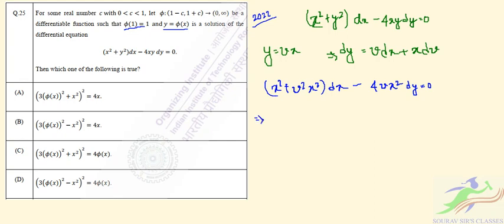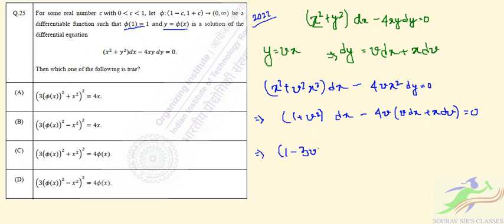After simplifying, we can write it in this way: 1 plus v squared dx minus 4v times (v dx plus x dv) equal to 0. From here, after simplifying, we can write it as 1 minus 3v squared — so v squared minus 4v squared gives 1 minus 3v squared — dx minus 4vx dv equal to 0.